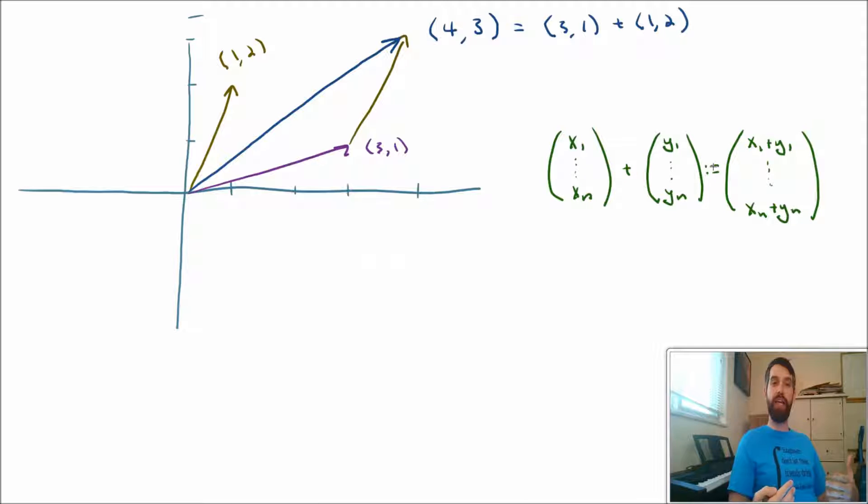And then we've seen that geometrically, it corresponds to this tip to tail addition of my vectors. And if I think about them both as a set of instructions, it's like you do the one instruction, go 3 to the right and 1 up, and then you do the other instruction, go 1 to the right and 2 up.